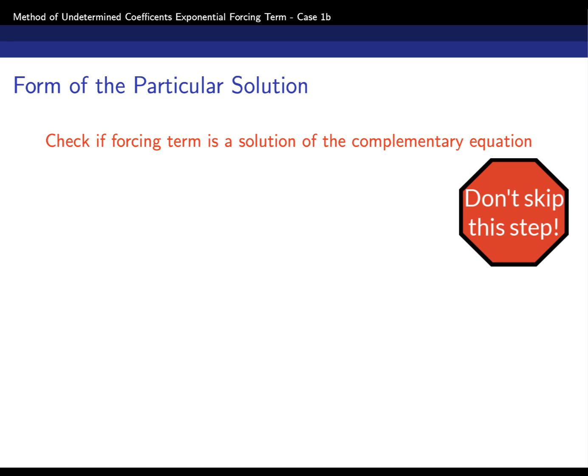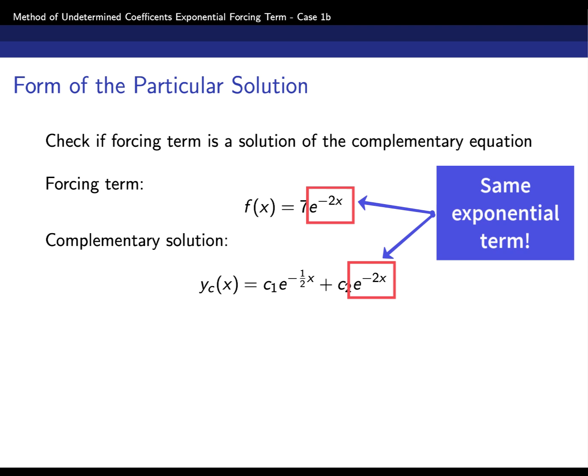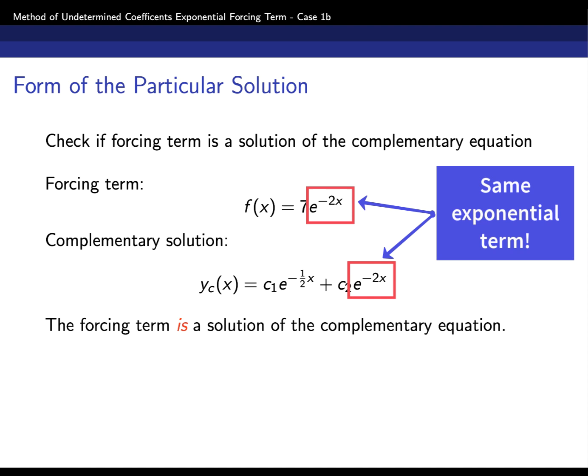Now we make the all-important check to see what form the candidate solution for the particular solution should take. We check if the forcing term is a solution of the complementary equation. The exponential term in the forcing term has exponent -2x, and that is one of the terms in the complementary solution. This means we can set c1=0 and c2=7, and the complementary solution becomes exactly the forcing term — so the forcing term is a solution of the complementary equation. That's the special case.